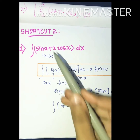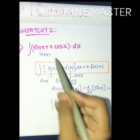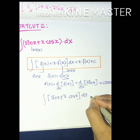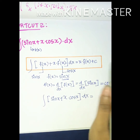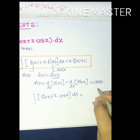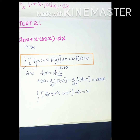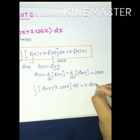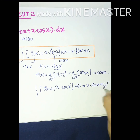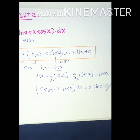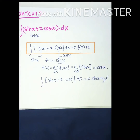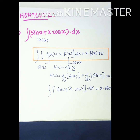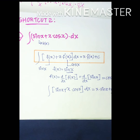The final answer is x·f(x) + C. Since f(x) = sin x, the answer is x·sin x + C. Using these shortcuts, you can see how easily and quickly we can solve these problems.